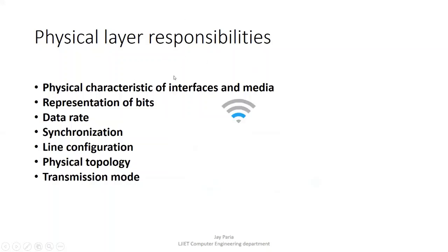The first responsibility of the physical layer is the characteristics of interfaces and media, which means what type of medium you are using for communication — it can be wired or it can be wireless.